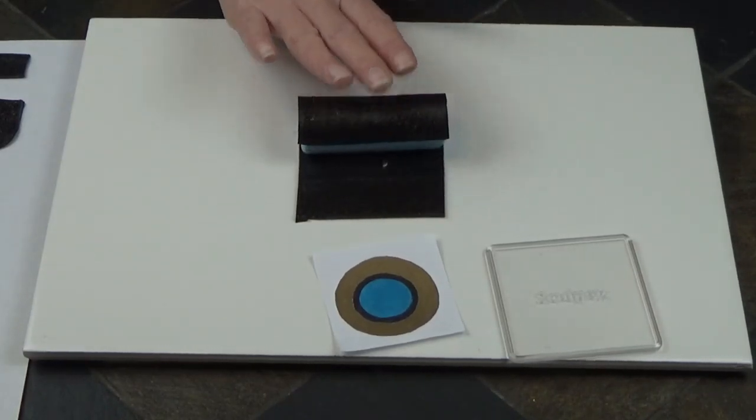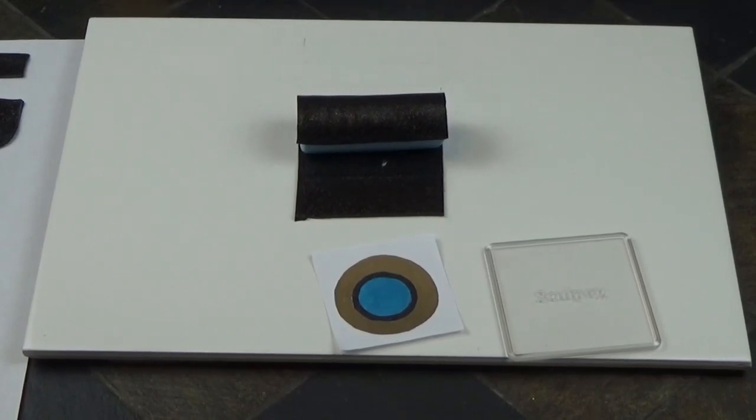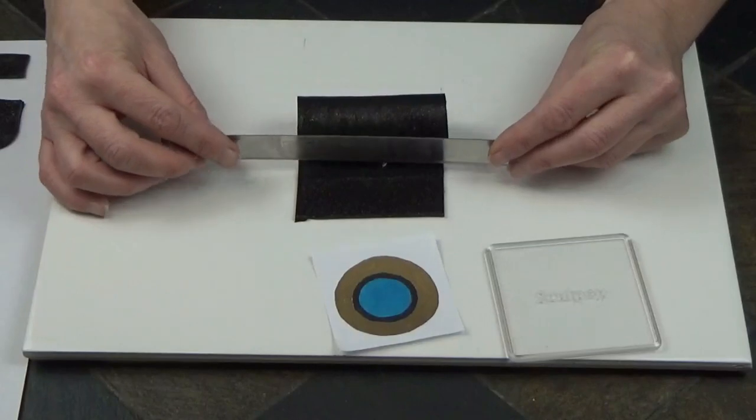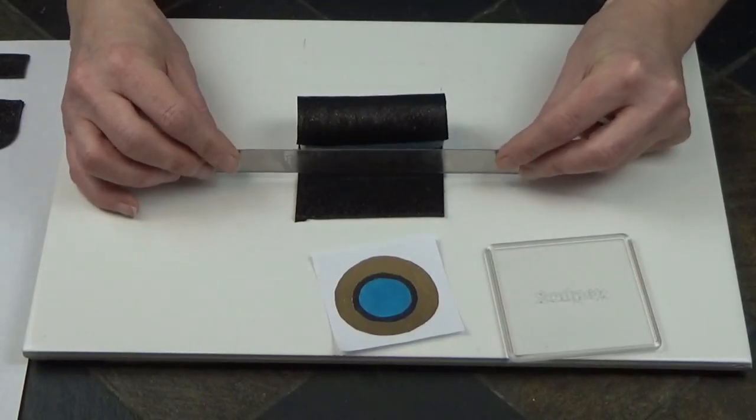I do that a couple of times so that I can see the mark that it makes and then I'm going to use my blade and I'm going to trim right where that mark is on my sheet.